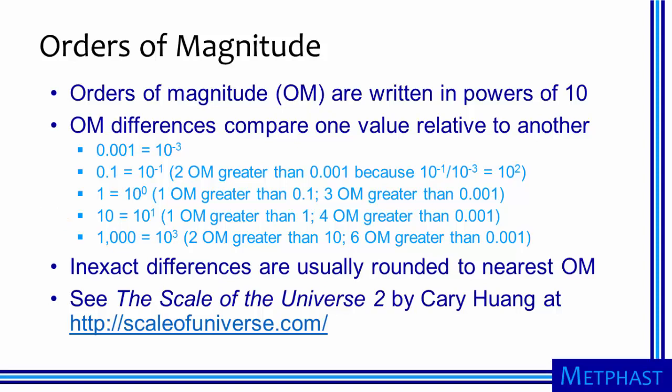Our last example is 1000, which is 10 to the third power, so it is two orders of magnitude greater than 10 and six orders of magnitude greater than 0.001. Orders of magnitude are important in nanotechnology and the health of products that incorporate nanotechnology because we are talking about dimensions that vary by many powers of 10.